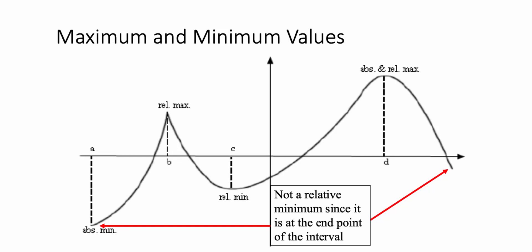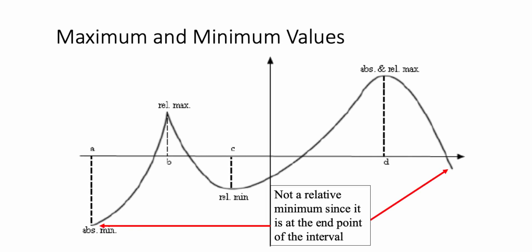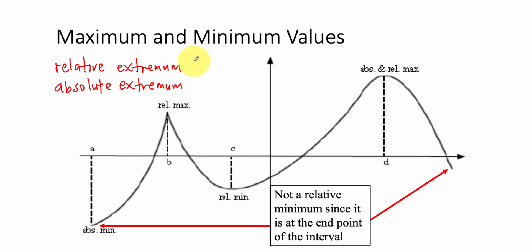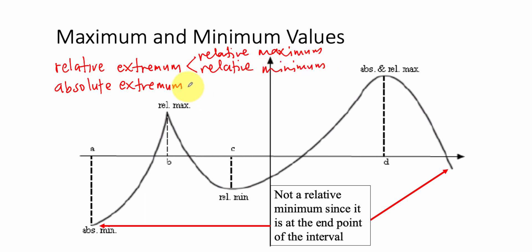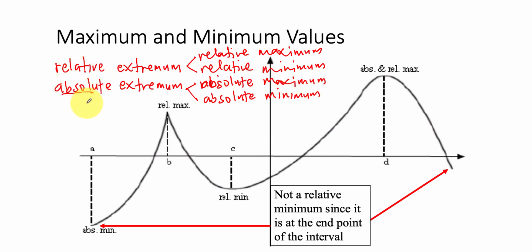Hello everyone! In this video, you will learn Maximum and Minimum values. We have Relative Extremum and Absolute Extremum. Relative Extremum means Relative Maximum or Relative Minimum. Absolute Extremum means Absolute Maximum or Absolute Minimum. Absolute means the highest for Absolute Maximum or the lowest for Absolute Minimum.